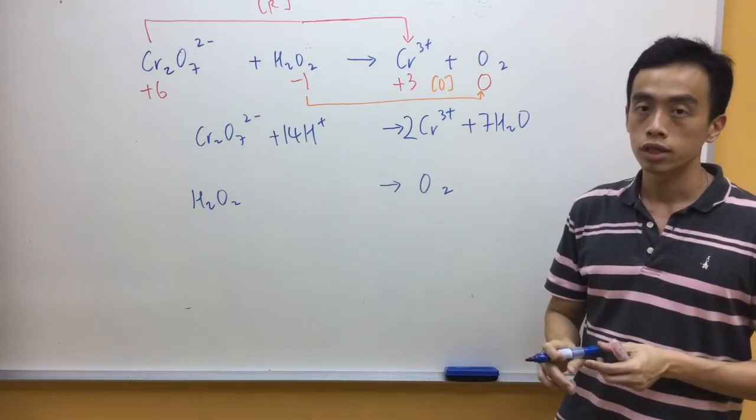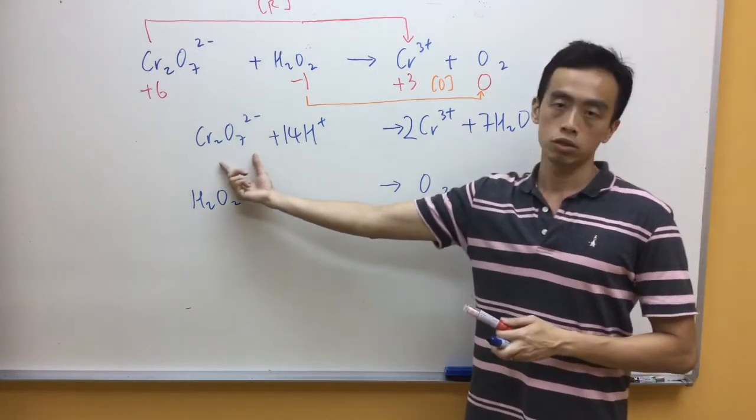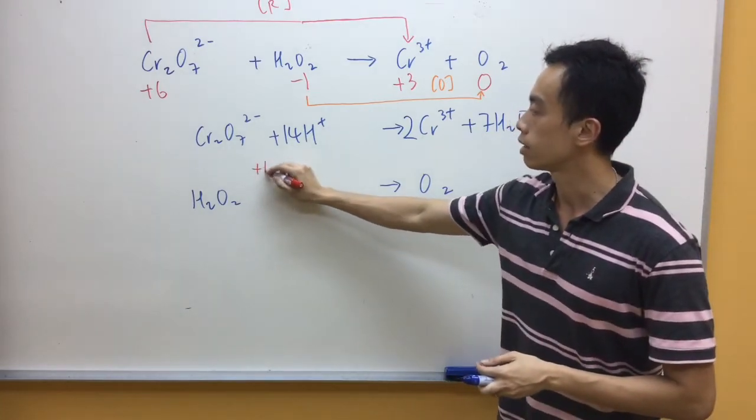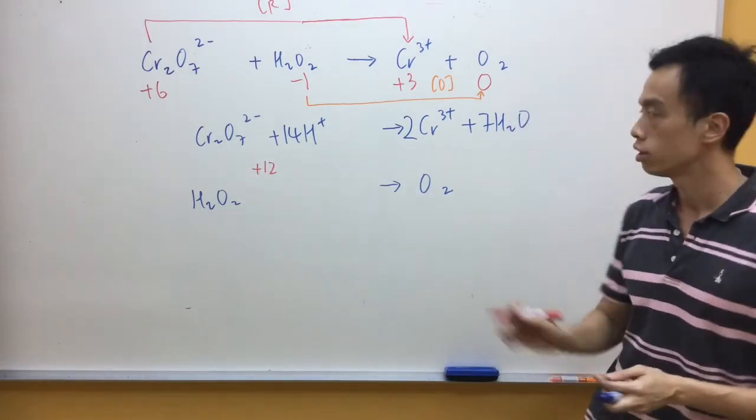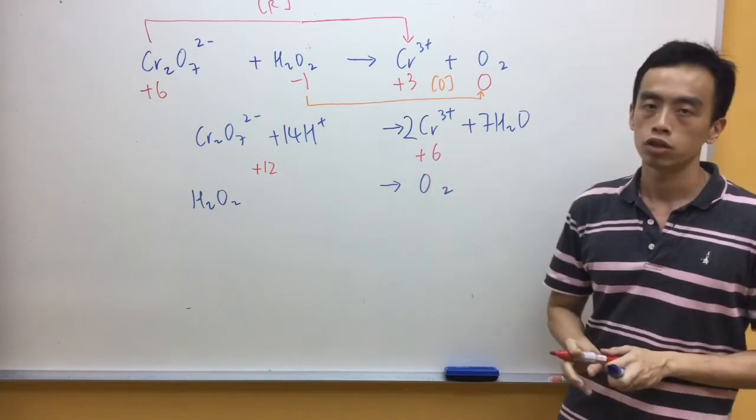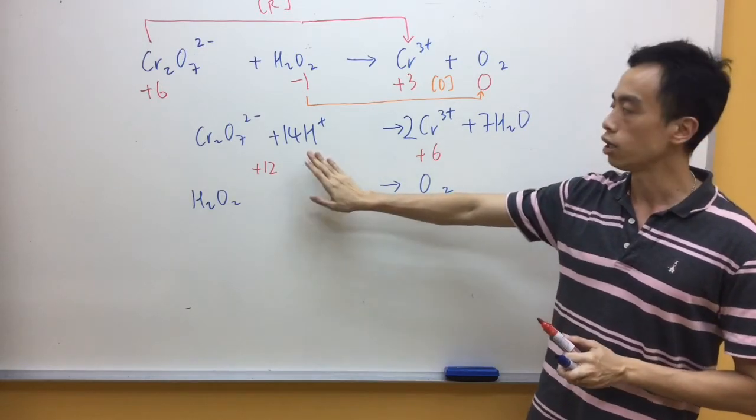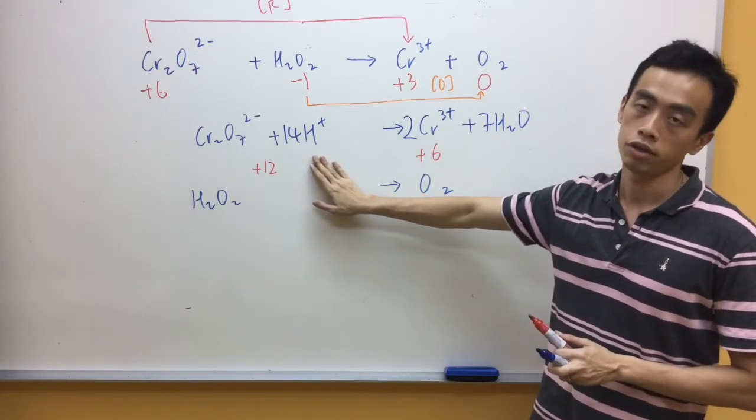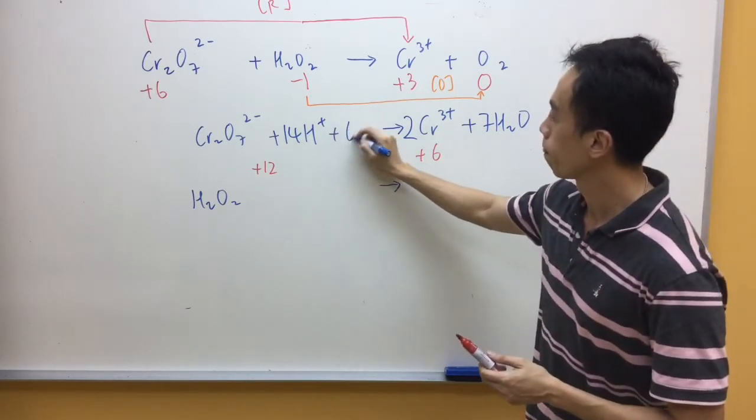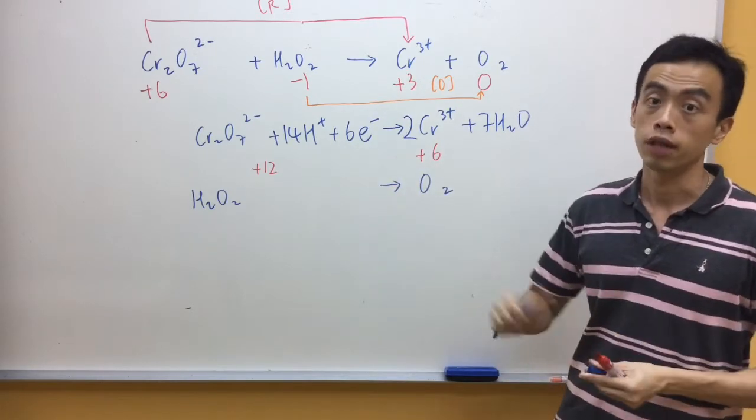After that I need to balance the charge using electrons. If you consider the charges in this case, this is a -2 charge plus 14 charge. Overall left hand side will be a +12 charge. Right hand side you have 2 of this +3 charge, so overall charge is +6 on the right hand side. So left hand side I have more positive charges. I need to add electrons on the left hand side. So in this case I need to add 6 electrons on the left hand side. So this will be the reduction half equation for the Chromium.